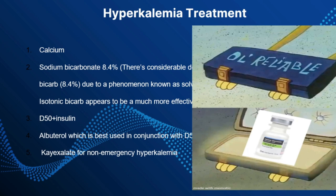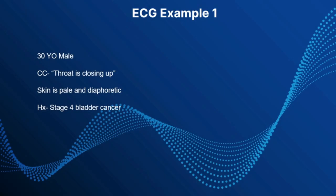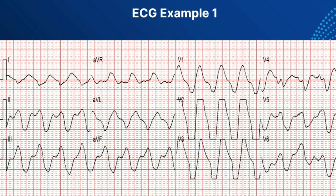Here's ECG Case 1: a 30-year-old male whose complaint is that his throat feels like it's closing up. Visual inspection of the oral cavity and pharynx shows no swelling. He hasn't eaten anything new, no hives, no angioedema. He takes an oxy but has no other medications. His skin is pale and diaphoretic, and his eyes show some jaundice. His history is stage 4 bladder cancer. You get him on the stretcher, do a 12-lead, and notice his BGL is 19.